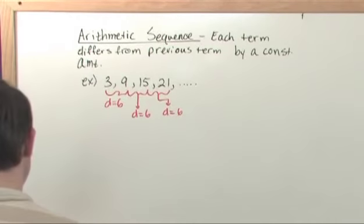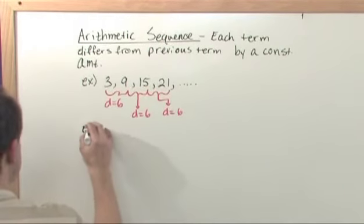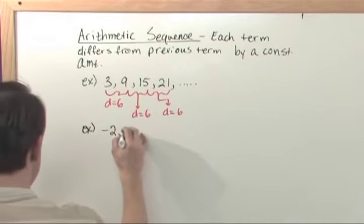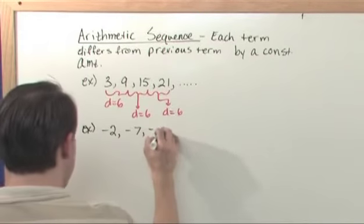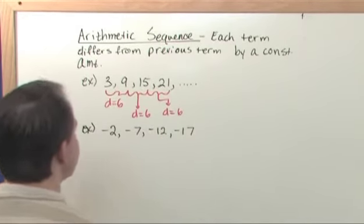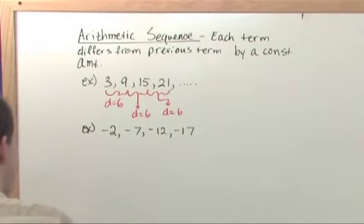So as another example, if I had, let's say, negative 2, negative 7, negative 12, negative 17, then let's look at that.